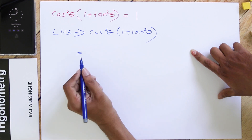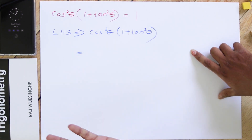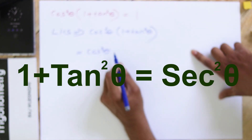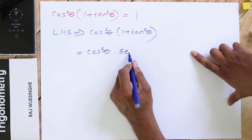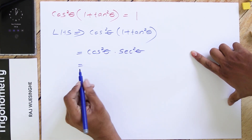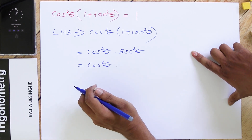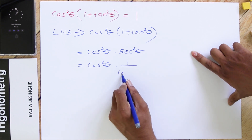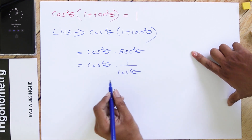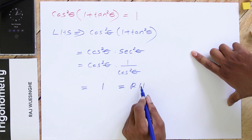There will be two ways of doing it, but the easiest way is — without opening the bracket — we recognize that 1 + tan²θ = sec²θ. So we have cos²θ × sec²θ. Since sec theta means 1/cos theta, sec²θ means 1/cos²θ. So cos²θ and 1/cos²θ cancel off, and we get the answer 1, which is RHS.